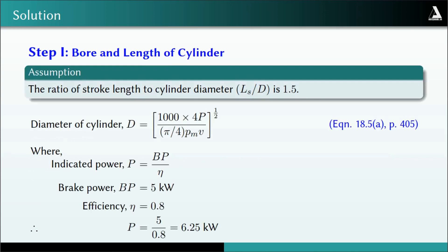In the first step we determine the bore diameter and length of the cylinder. We assume the stroke length to cylinder diameter ratio Ls/D is 1.5. The relation for finding the bore diameter D is: D = [1000 × (4P) / (5/4 × PM × V)]^(1/2), given as equation 18.5A on page 405.